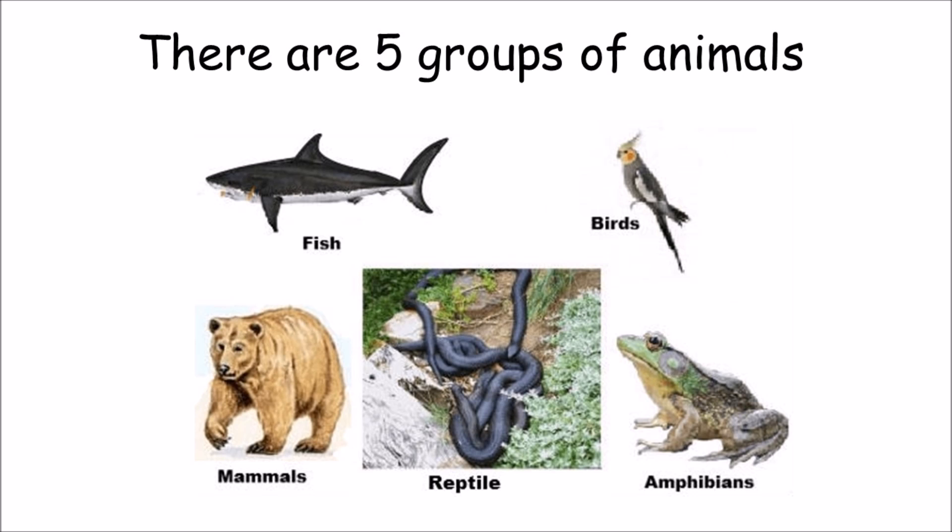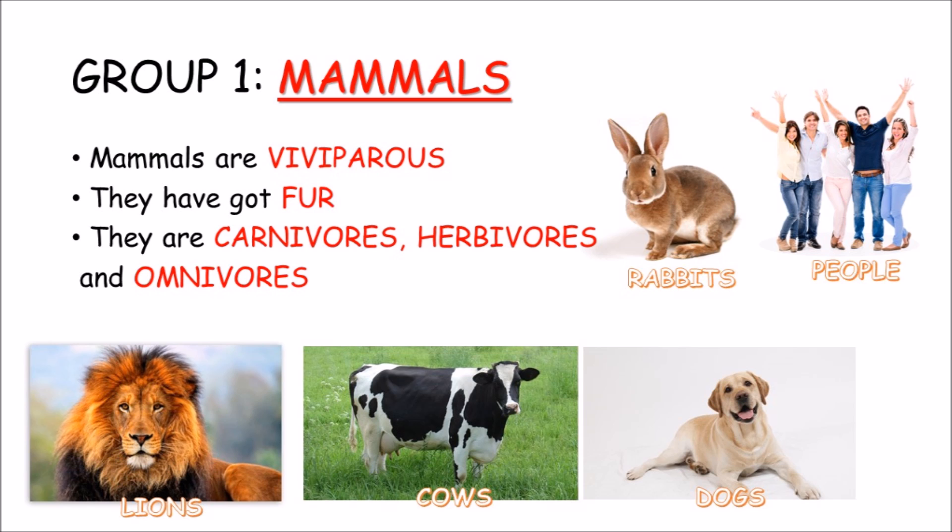There are five groups of animals. Mammals are viviparous. They use fur to protect their bodies. They are carnivores, herbivores and omnivores. Lions, cows, dogs, rabbits and people are mammals.